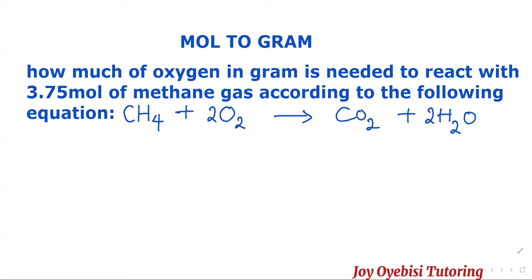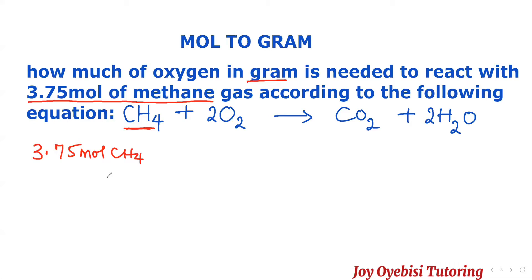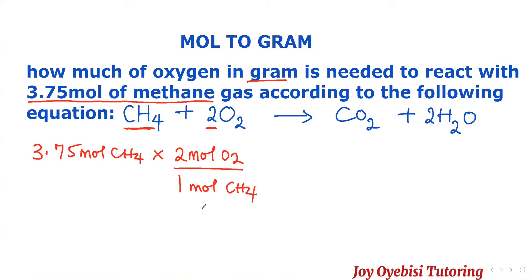The next question says: how much oxygen in grams is needed to react with 3.75 moles of methane gas according to the following equation? They gave us 3.75 moles CH4, and the question asks for grams — so we're going from moles to grams. We start with 3.75 moles CH4. The next step is to use the stoichiometric relationship: there are two moles of oxygen against one mole of methane. Cancel out the moles of methane — they need to be on opposite sides.